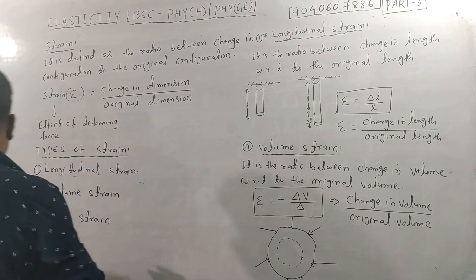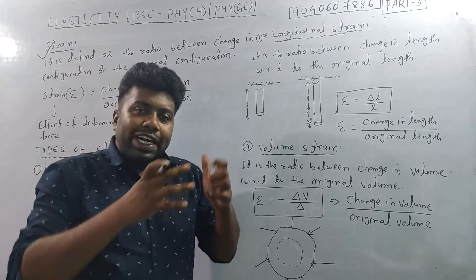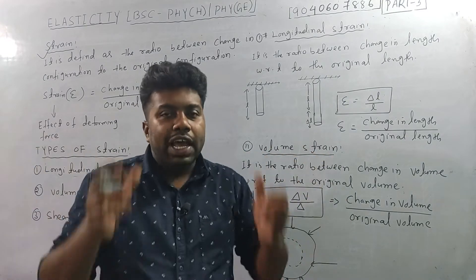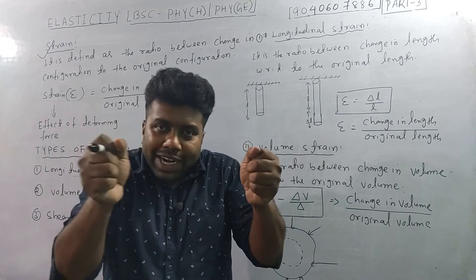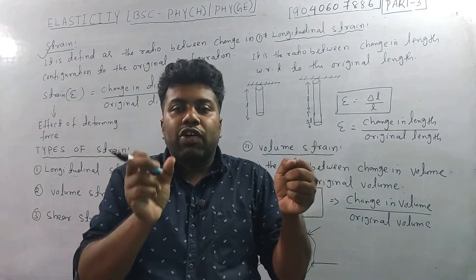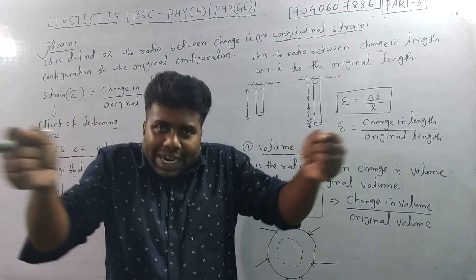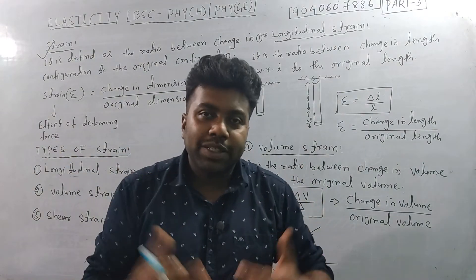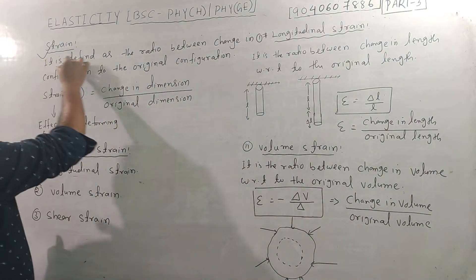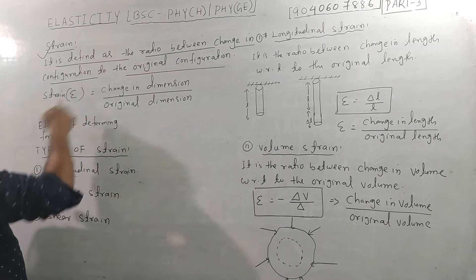Let's start. What is the strain? When a force is applied — it is a deforming force — we may be able to change the shape. We can change the shape; you may assume it is a rubber or plastic. We will make the shape change. Strain is defined as the ratio between change in configuration to the original configuration.